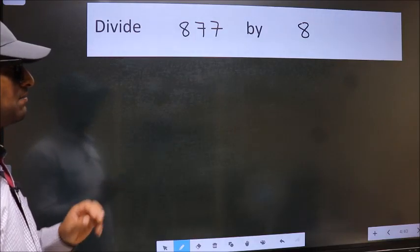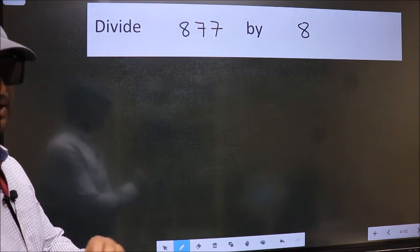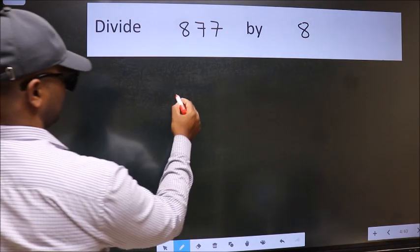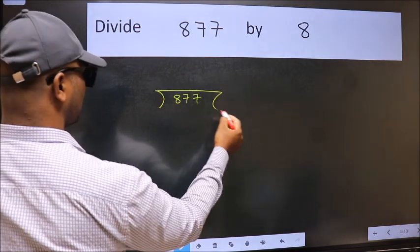Divide 877 by 8. To do this division, we should frame it in this way. 877 here and 8 here.